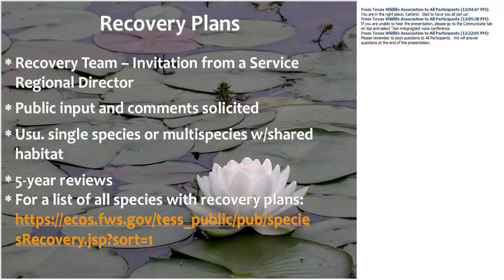The whole purpose of the Endangered Species Act is to protect species from going extinct and increase numbers enough to recover to a point where they no longer need federal protection. After a species is listed, a recovery team is formed to develop a recovery plan. Public comment is requested by posting the plan online for a 90-day public commenting period. Most recovery plans target a single species, which has shown to be more effective in preventing decline and reaching recovery goals than multi-species recovery plans. Recovery plans are reviewed every five years to assess recovery progress, ongoing threats, and new information about the species.